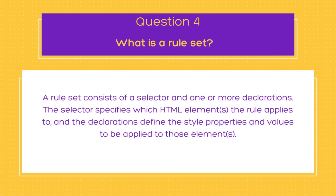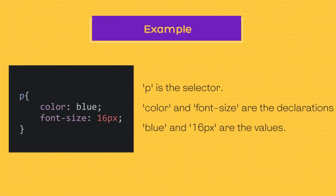The next question is: what is a ruleset? A ruleset consists of a selector and one or more declarations. The selector specifies which HTML element the rule applies to, and the declarations define the style properties and values to be applied to those elements. In this example, p is the selector, and color and font-size are the declarations. The value blue is assigned to the color property, while 16px is assigned to the font-size property.